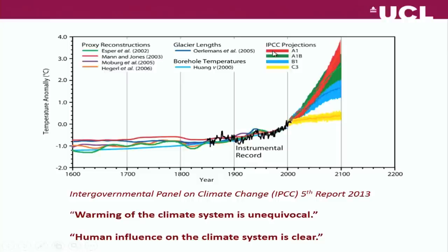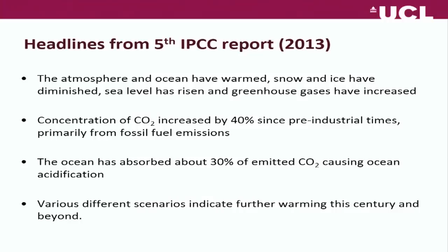Warming of the climate system is unequivocal, and it is down to us — human influence on the climate system is clear. The atmosphere and ocean have warmed, snow and ice have diminished, sea level has risen, and greenhouse gases have increased. The concentration of carbon dioxide has increased by 40% since pre-industrial times, primarily from fossil fuel emissions. The ocean has absorbed about 30% of carbon dioxide, causing ocean acidification. All scenarios indicate further warming this century and beyond.